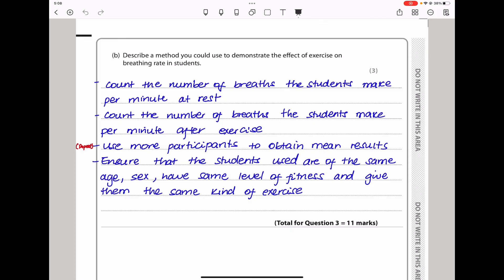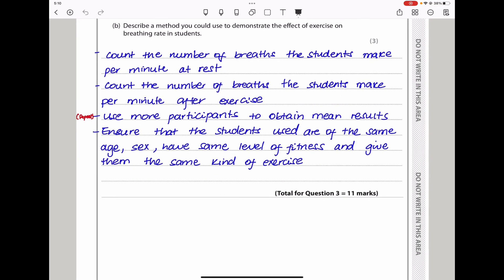Describe a method you could use to demonstrate the effect of exercise on breathing rate of students. What we need to do is get the students we're going to work with. Ensure that these students are the same age, the same sex, and they have the same level of fitness. Give them the same kind of exercise. However, before the exercise, let them sit and count the number of breaths the students make per minute when they are at rest. Then give them the same exact exercise and count the number of breaths the students make per minute after the exercise. Make sure to use more participants and be able to calculate the mean. Get various people who are exactly the same age, same sex, same level of activity, same level of fitness, many of them, and then get their results and find the average.